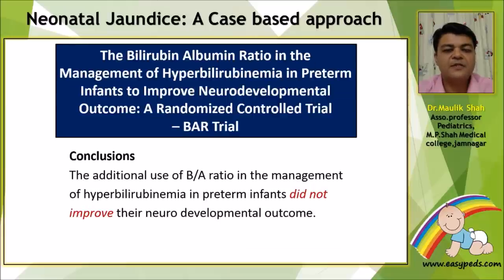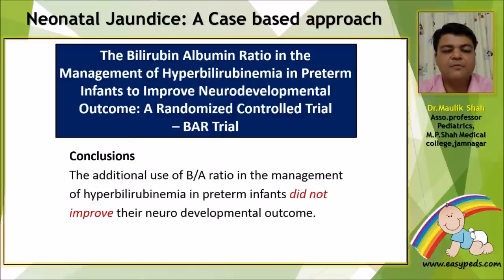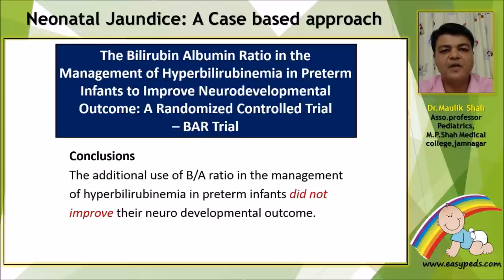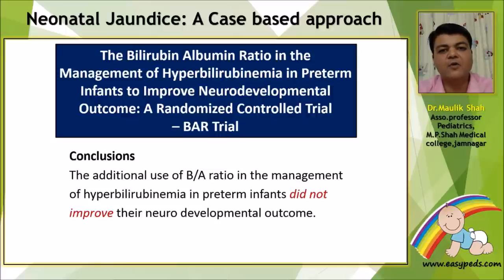One very interesting study based upon the bilirubin-albumin ratio is called the BAR trial. This BAR trial looked at the management of hyperbilirubinemia in premature babies to improve neurodevelopmental outcome. The conclusion has recently arrived: additional use of the bilirubin-albumin ratio in the management of a premature baby for hyperbilirubinemia did not improve the neurodevelopmental outcome in this study.